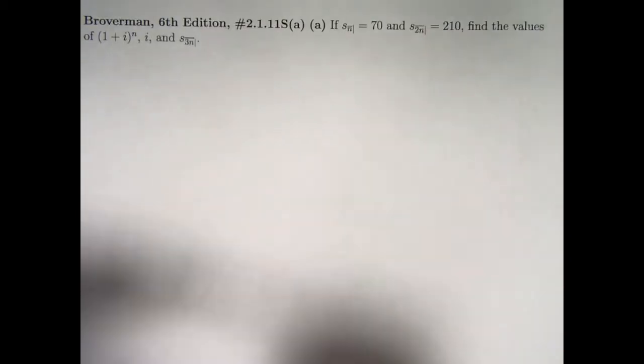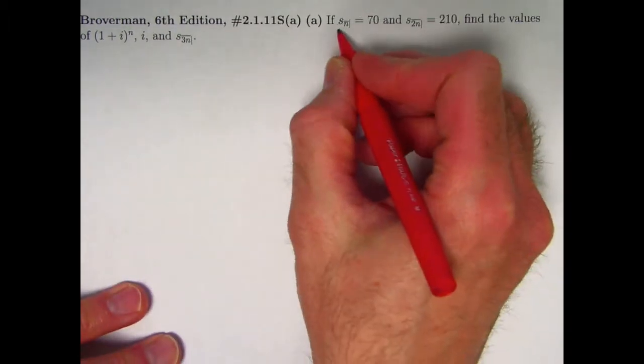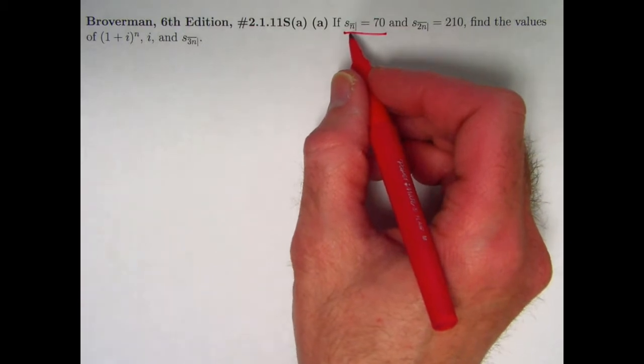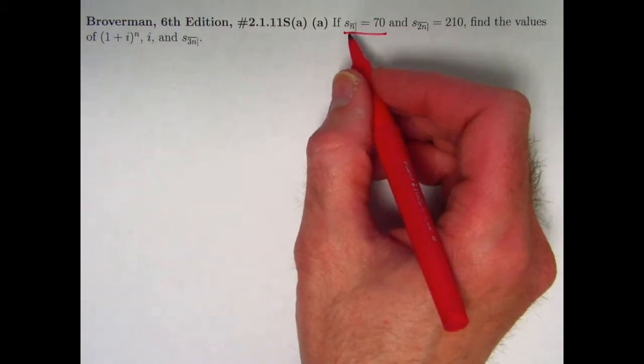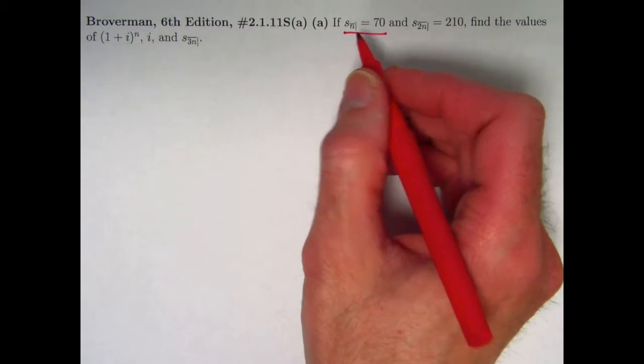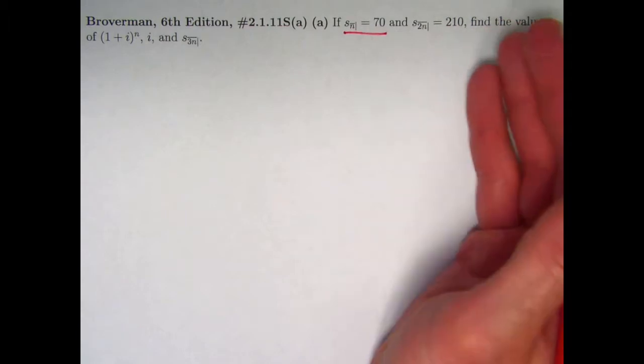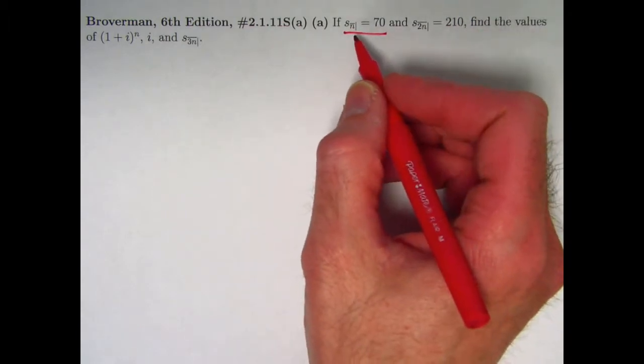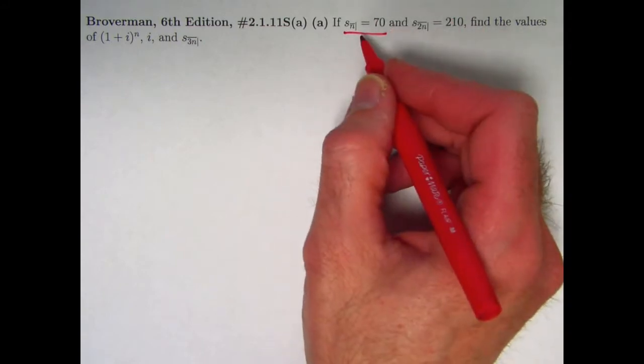The problem statement involves symbols we've introduced in the last couple videos. You've got s_n equaling 70. What does s_n represent? It's the future value or accumulated value of annuity payments of one.